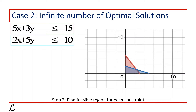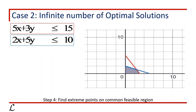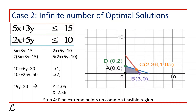Now we can see the feasible regions of both constraints. Step 3 is to find the common feasible region, which is the region where all constraints are satisfied, shown on the screen. Step 4 is to find the extreme points of the common feasible region. There are 4 extreme points: Point A at (0, 0), Point B at (3, 0), and Point D at (0, 2) are already known. Point C is the intersection of both lines, obtained by solving 5x plus 3y equals 15 and 2x plus 5y equals 10. Multiplying the first equation by 2 and the second by 5, then subtracting, we get 19y equals 20, giving y equals 20/19, which is approximately 1.05. Substituting back gives x approximately equals 2.36. So Point C is approximately (2.36, 1.05).